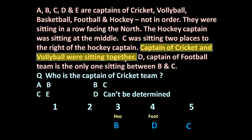The captain of cricket and volleyball were sitting together. Cricket and volleyball captains cannot occupy positions 4 and 5 because those are taken, so obviously they will be at positions 1 and 2. Only one sport is left — basketball — so basketball captain will be C. The remaining people are A and E, who are the captains of cricket and volleyball. However, it is not clear whether A is the captain of cricket or E is the captain of cricket.